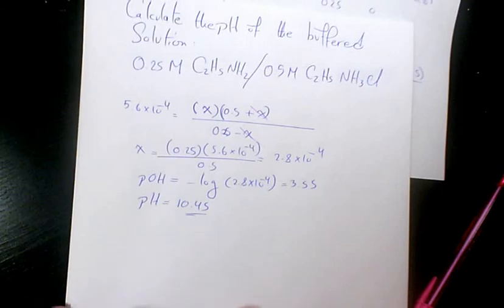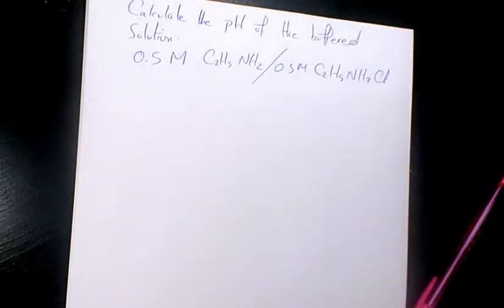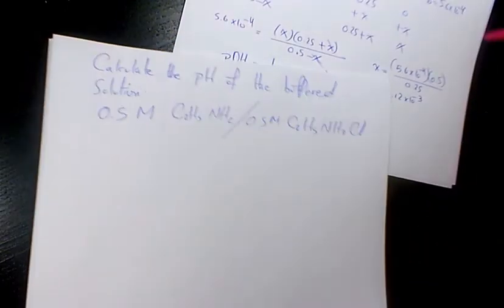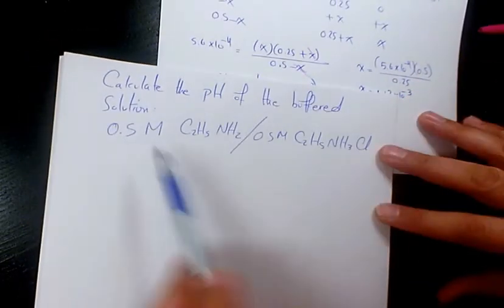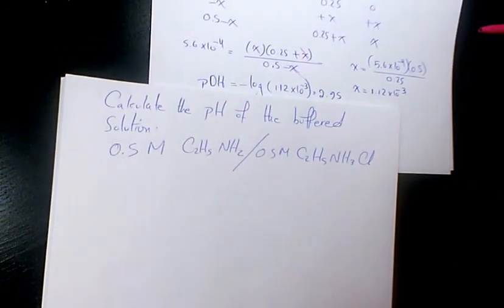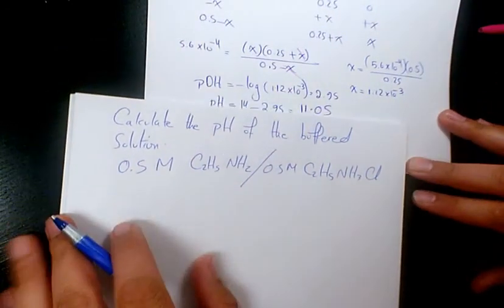So everything was the same, only the concentration was changed. So that's why we have the new pH. Let's do the same thing for the third part of this question which is saying calculate the pH of the buffer solution when we have 0.5 and 0.5 for each part, acid and base. So when we write...